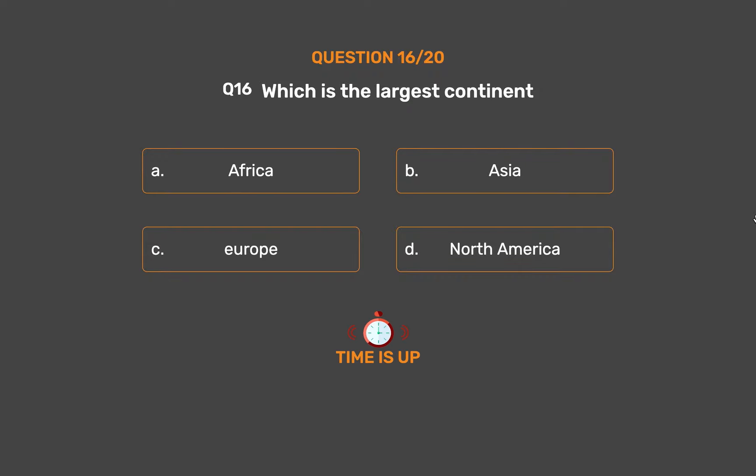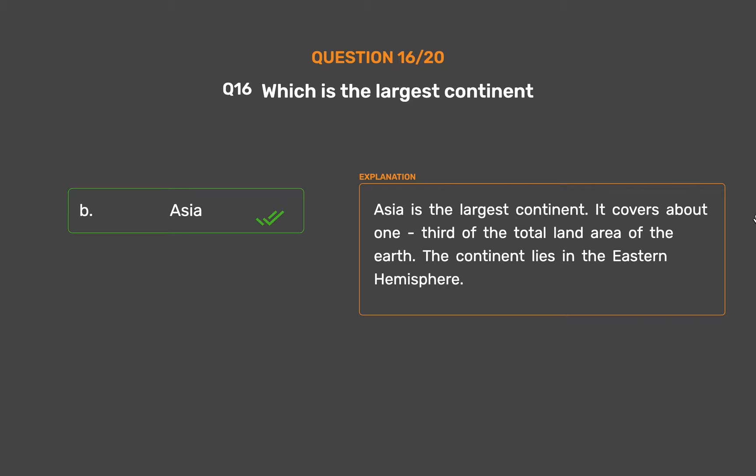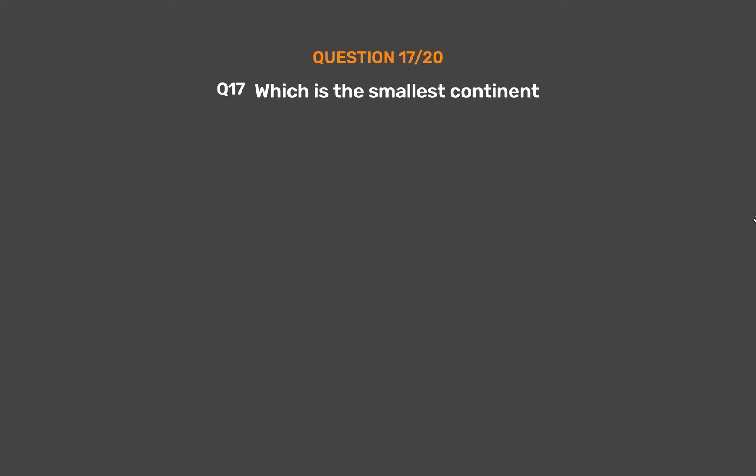The correct answer is Option B: Asia. Asia is the largest continent. It covers about one-third of the total land area of the Earth. The continent lies in the eastern hemisphere.